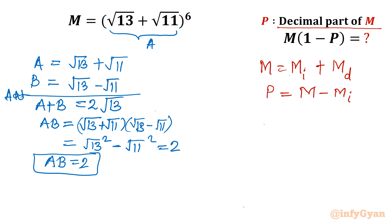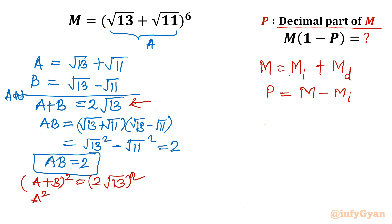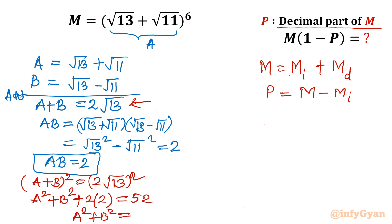Now I will consider a plus b equals 2 root 13 and take the whole square. So (a plus b)² equals (2 root 13)², which gives a² plus b² plus 2ab equals 4 times 13, which is 52. Since ab is 2, we have 2ab equals 4. Therefore a² plus b² equals 52 minus 4, which is 48.